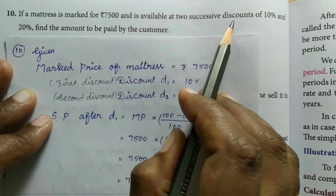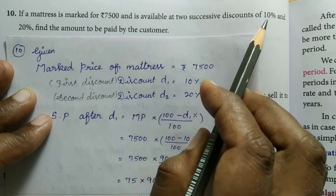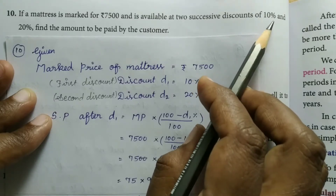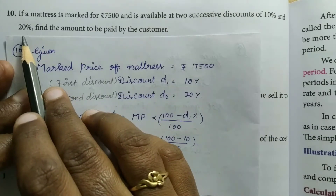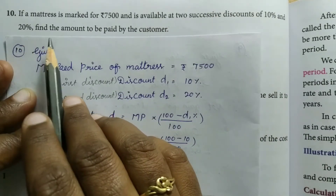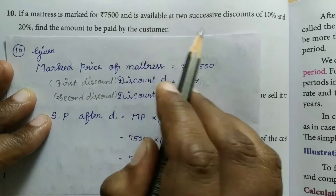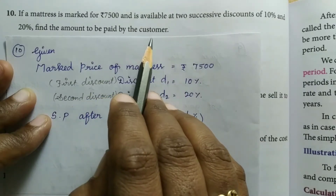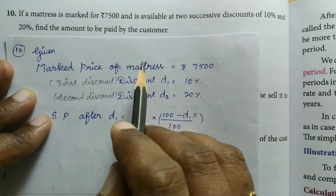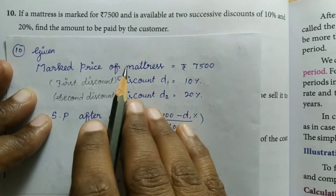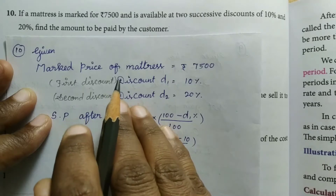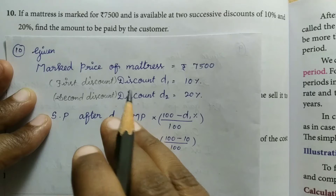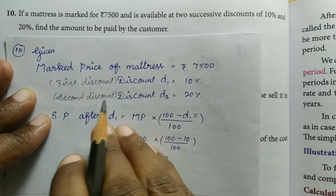So, 2 discounts are introduced. The 1st discount is 10%, and the 2nd discount is 20%. We need to find the amount the customer has to pay. The mattress is available to buy with the first discount of 10%.